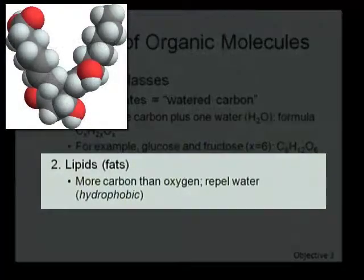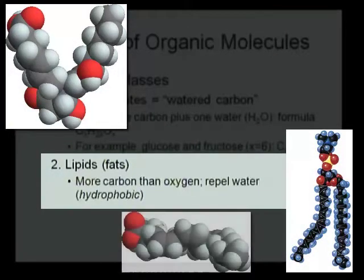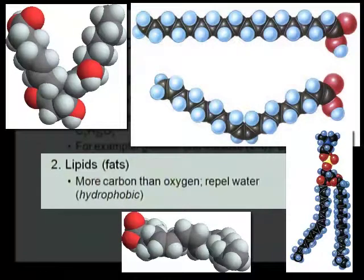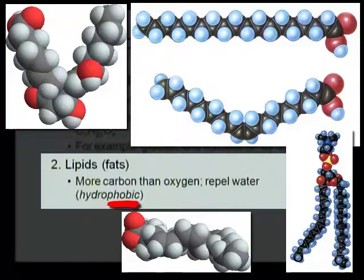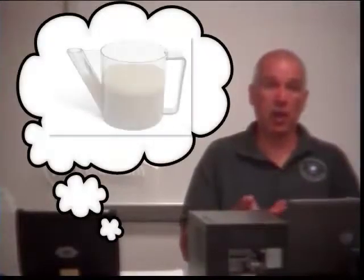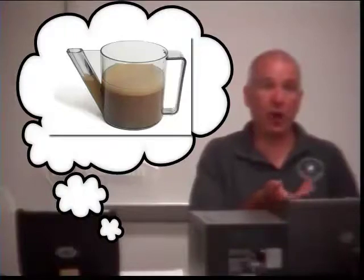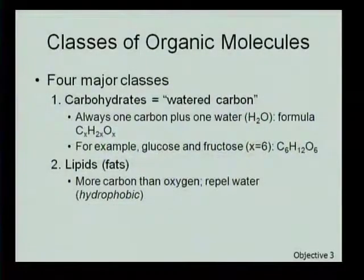Lipids may have a few oxygens, and may even have a phosphorus atom, but they're going to have a lot more carbon than oxygen. They're made up mostly of carbons and hydrogens, and that arrangement is very hydrophobic. Hydrophobic means water-hating — hydro is water, phobic is fearing. Hydrophobic molecules repel water. Fats, oils, and waxes are water repellent, and these are examples of lipids we're going to find in biological systems.